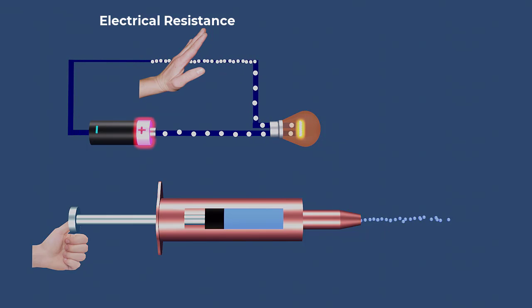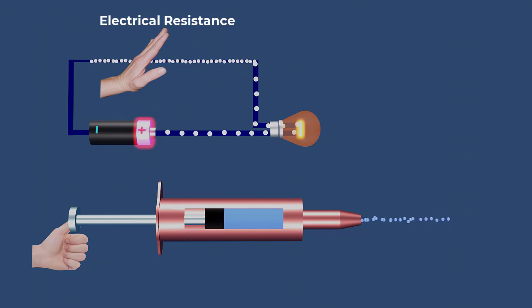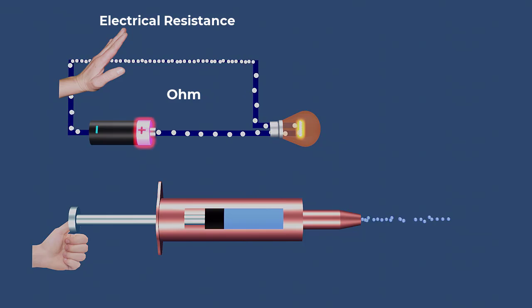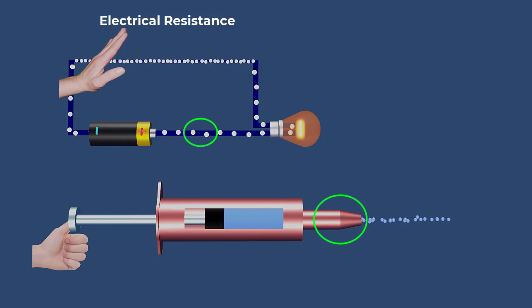Opposition offered by a material to the flow of electricity is called resistance. It is measured in ohms. The resistance of a conductor is similar to the size of a pipe.